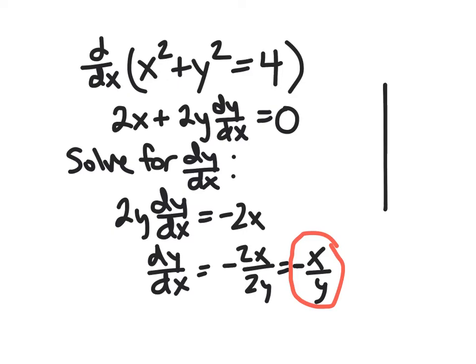And we can kind of check ourselves here. So if we draw our little circle. So notice that at x equals 0, we're seeing slope 0, which matches our picture here. And when y is 0, these points, we see vertical tangent lines. And that makes sense here because we're dividing by 0.